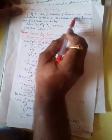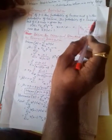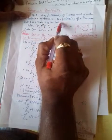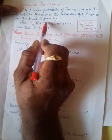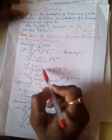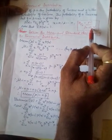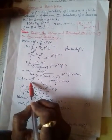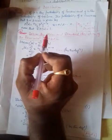If P is the probability of success and Q is the probability of failure, then the probability of X successes out of N trials is given by P(X) = NCX * P^X * Q^(N-X), where X is between 0 to N. NCX is given by the combination formula NCR = N! / ((N-R)! * R!). Note that the summation of P(X) is always equal to 1.